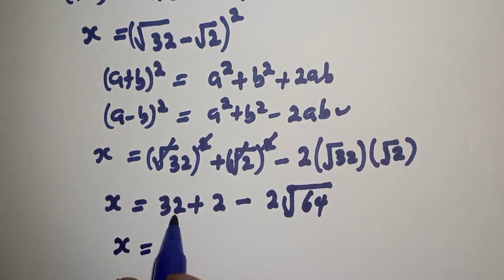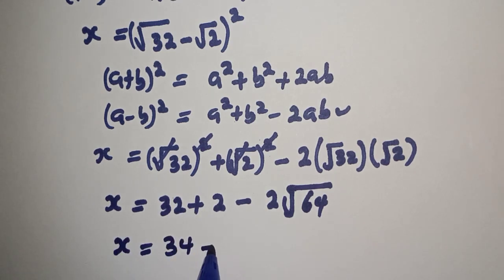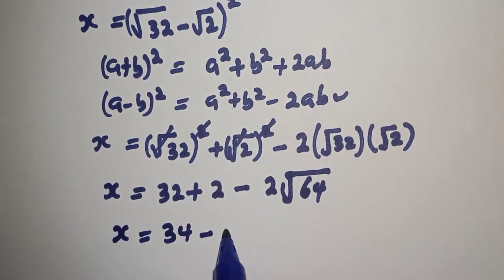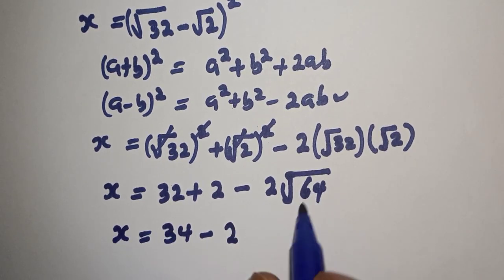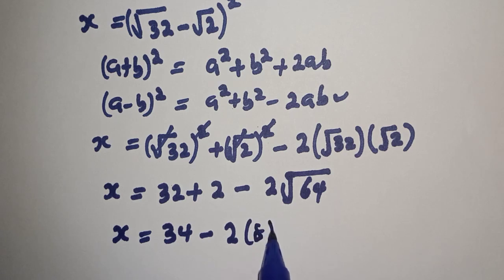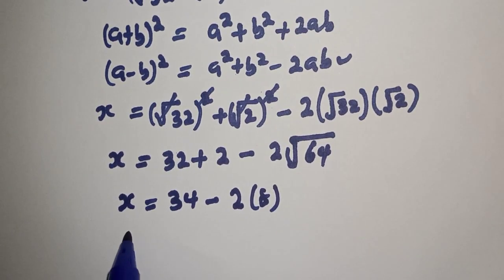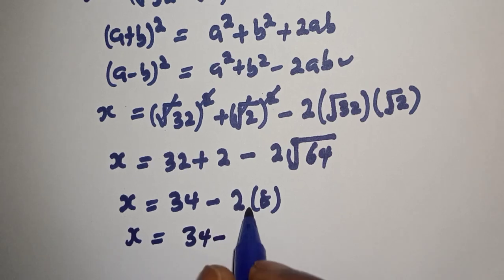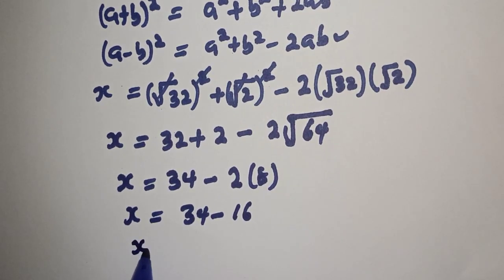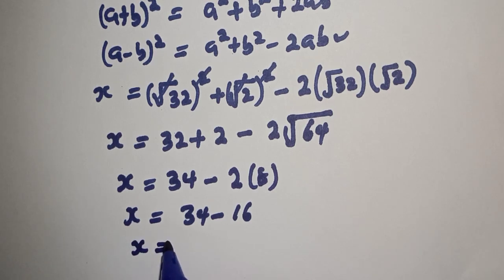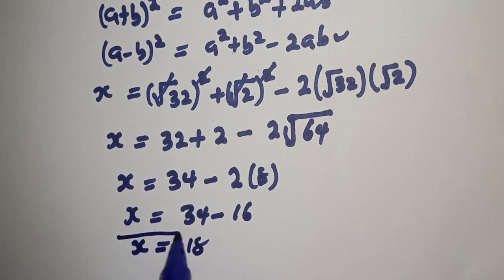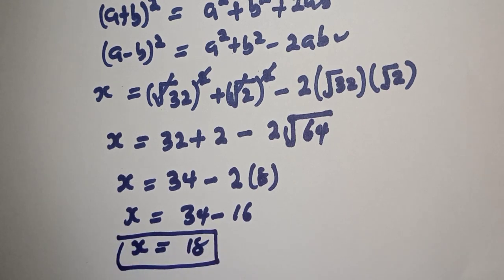S is equal to 32 plus 2, that is 34, minus 2 times square root of 64, which is 8. S is equal to 34 minus 2 times 8, which is 16. S is equal to 34 minus 16, that is 18, and this is the final answer.